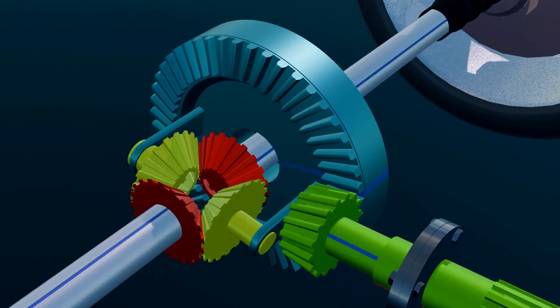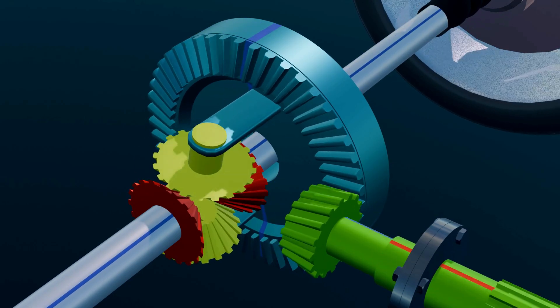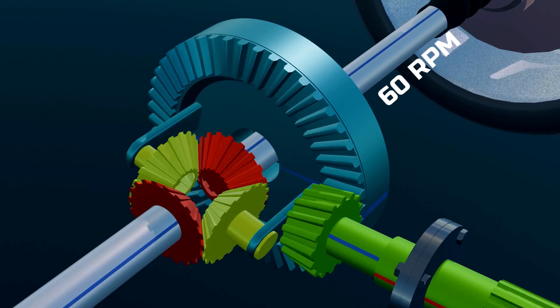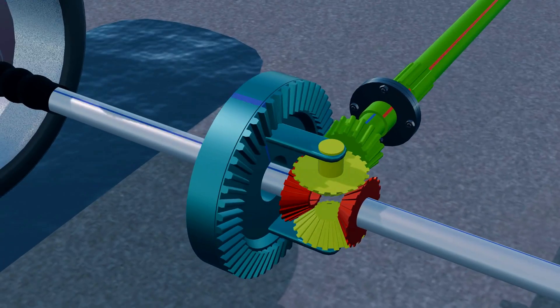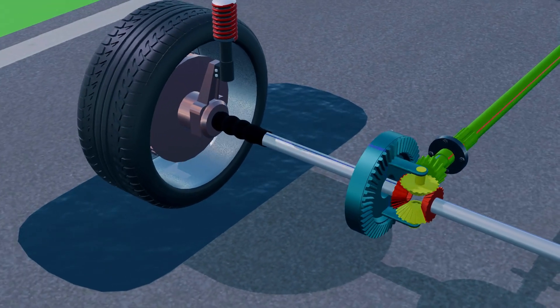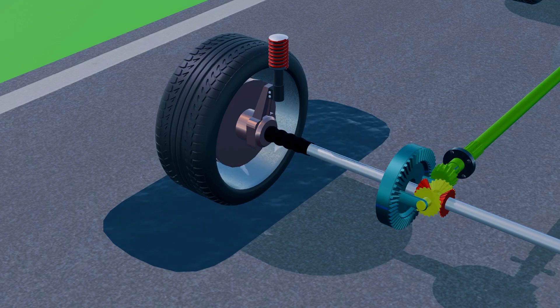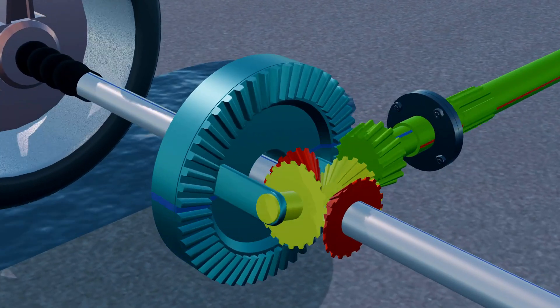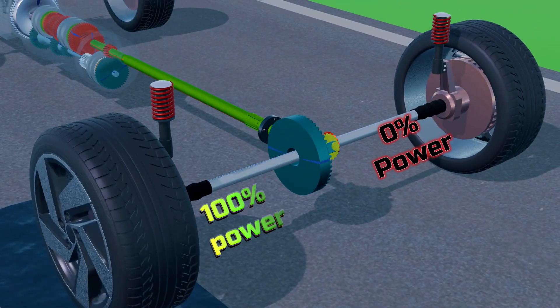When the vehicle turns, the outer wheel needs to rotate faster. In this case, the spider gear not only spins with the ring gear, but also rotates on its own axis, allowing the outer wheel to spin faster than the inner one. However, this gear system has one major drawback. If one wheel gets stuck on a slippery surface, the differential sends most of the power to that wheel because it's easier to rotate, leaving the other wheel with little to no power. This leads to a serious loss of traction.